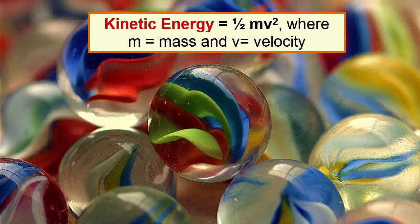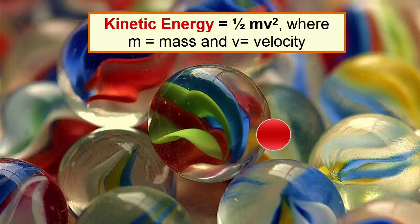Kinetic energy is the energy of motion of the atoms in a substance. Kinetic energy is calculated by taking the velocity or speed of motion and squaring it, then multiplying by the mass of the substance. The faster the motion of the atoms, the more kinetic energy it has.